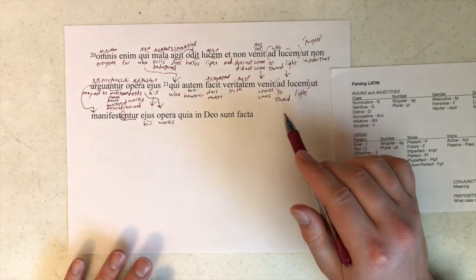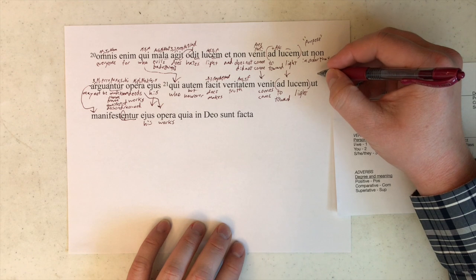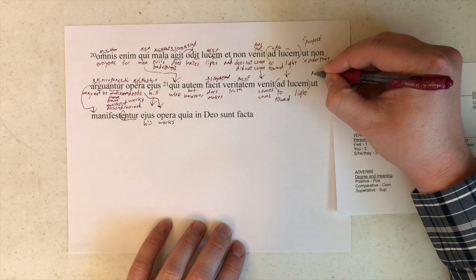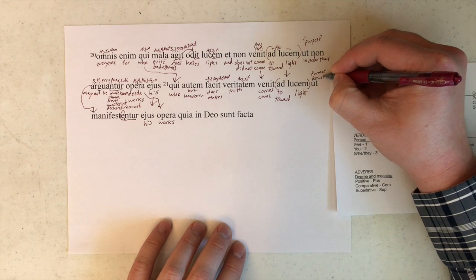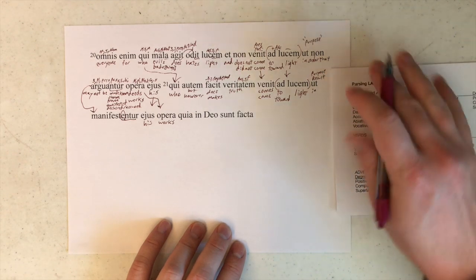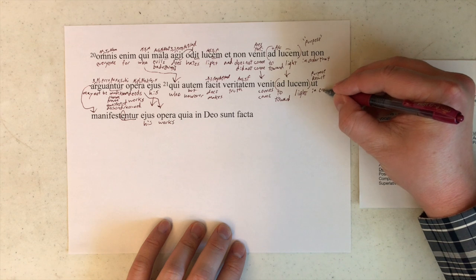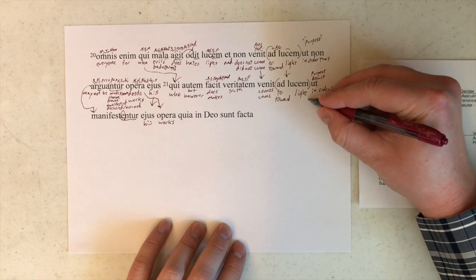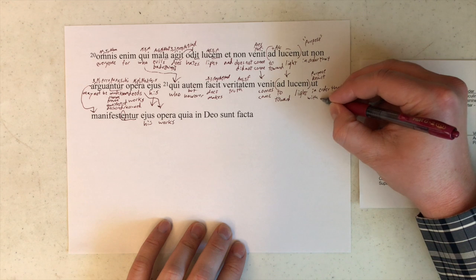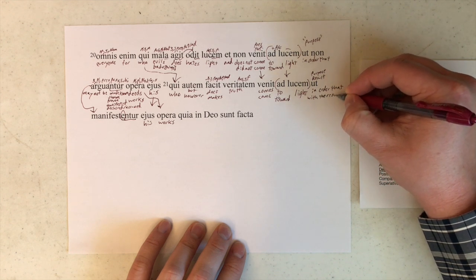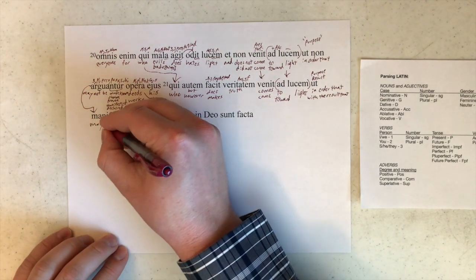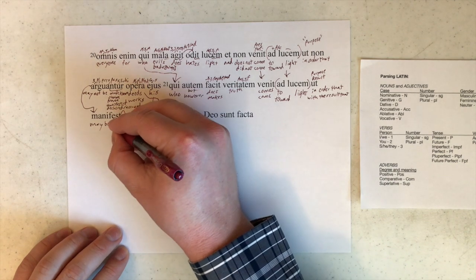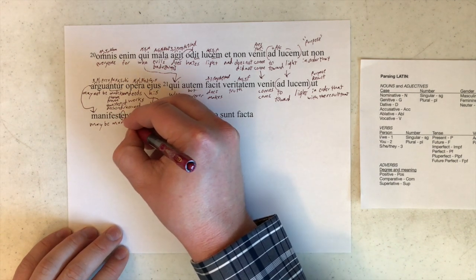So it might be a change in the Latin that I'm not aware of. So this one, I'm going to leave open, I'm going to write down both options. And then the Greek will tell us which one is the correct one. So purpose, or result. In order that, or with the result that his works may be manifested.